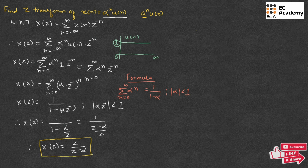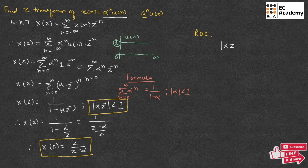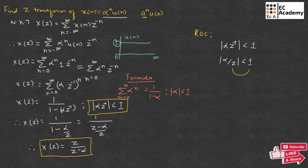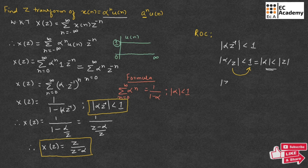Now let us find the Region of Convergence, or ROC. To find the ROC, we consider the condition where the magnitude of alpha z inverse is less than 1, which means the magnitude of alpha over z is less than 1. Rearranging, the magnitude of alpha must be less than the magnitude of z, so the magnitude of z must be greater than the magnitude of alpha.